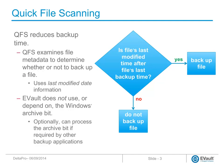Every file system type supported by an eVault agent includes both files and file metadata. File metadata includes such information as the file name, file permissions, file size, the last modified date, and the file owner. To determine if a file has changed since the last backup, QFS compares each file's last modified date to the date and time of the last backup. The advantage of using file metadata is that it is available in every file system type that an eVault agent might have to back up.